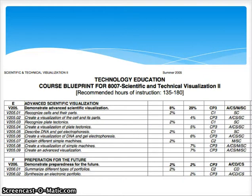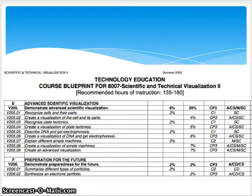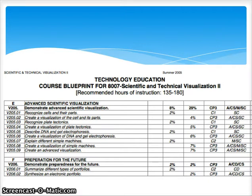Currently, Objectives 205.07 and 205.08 require students to be able to explain different simple machines and create a visualization of these simple machines. The blueprint lists math, science, and art as the integrative skill areas noted in the far right column. Science is required in understanding the forces required to make the simple machines operate, and math for calculating the ideal mechanical advantage. This objective completely leaves out half the course, which is technology.